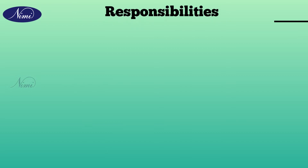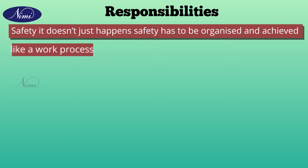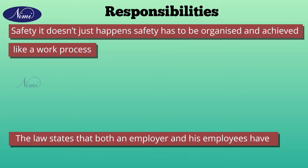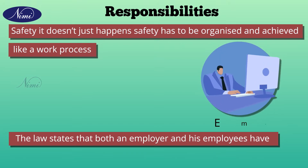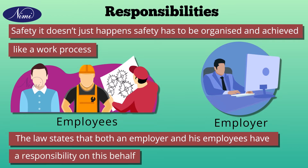Safety does not just happen. Safety has to be organized and achieved like a work process. The law states that both an employer and his employees have the responsibility on this behalf. Let us see the responsibilities of an employer and employees.